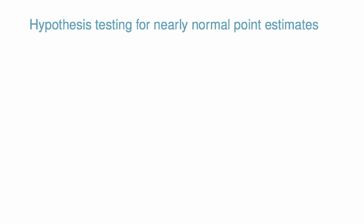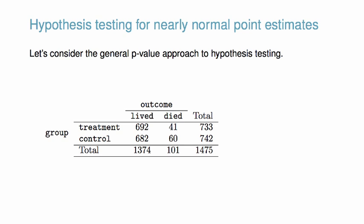Just as the confidence interval method works with many point estimates, we can generalize our hypothesis testing methods to new point estimates. Let's consider the general p-value approach to hypothesis testing by focusing on an example from medical drug trials. A drug called sulfinpyrazone was under consideration for use in reducing the death rate in heart attack patients. To determine whether the drug was effective, a set of 1,475 patients were recruited into an experiment and randomly split into two groups: a control group that received a placebo and a treatment group that received the new drug.